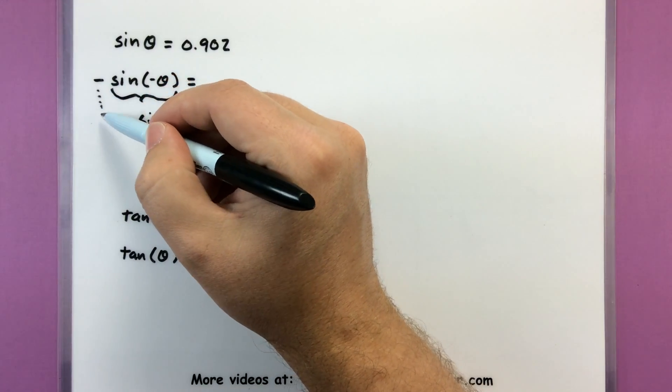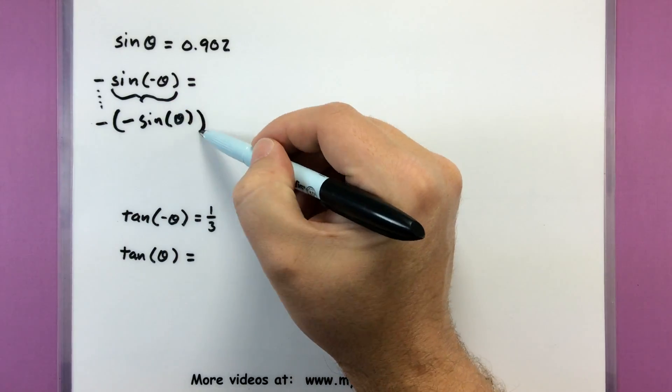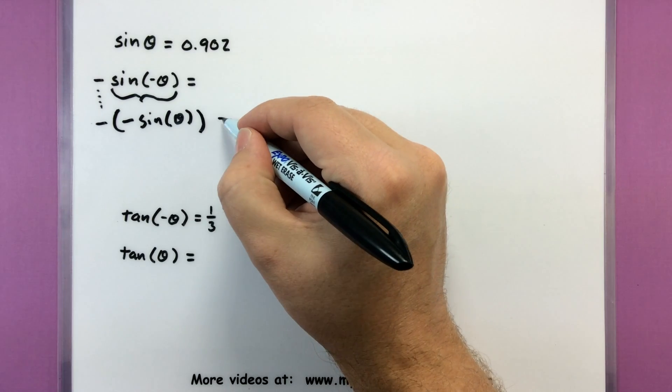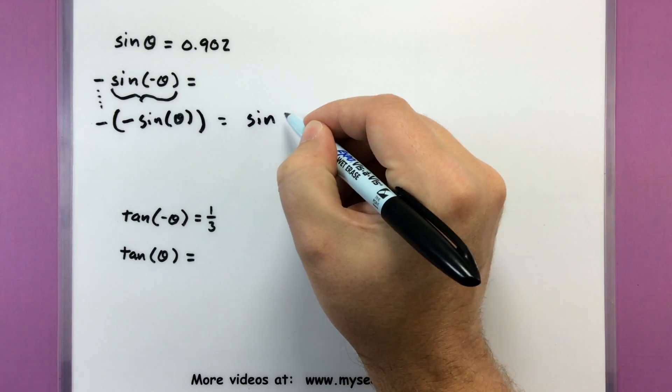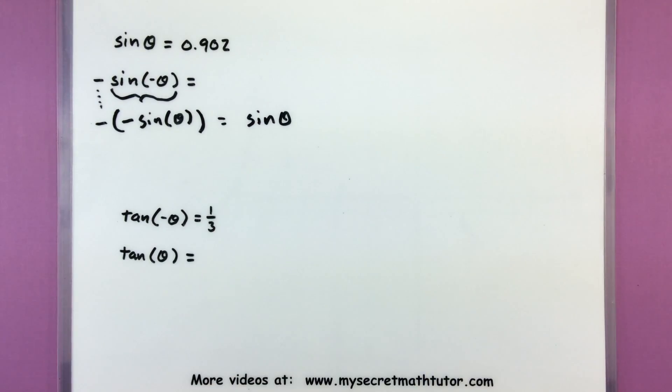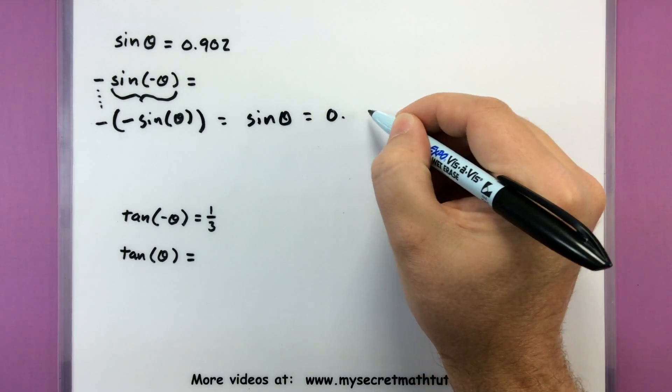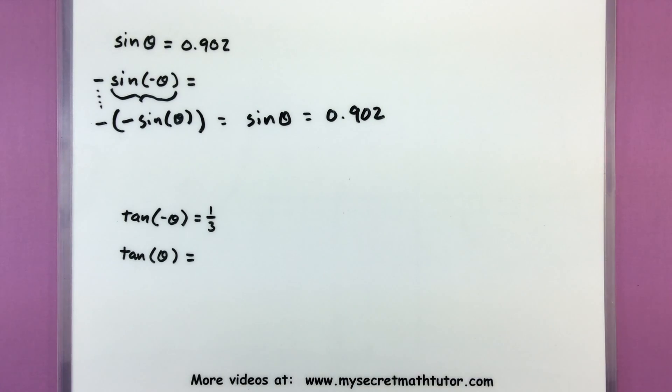Now this negative sign is still out front, so let's go ahead and put that there. And then I can say I have a negative times a negative, so this all equals positive sine of theta. And I know the value of sine of theta, so I can just go ahead and put that in there, 0.902, and we're done.